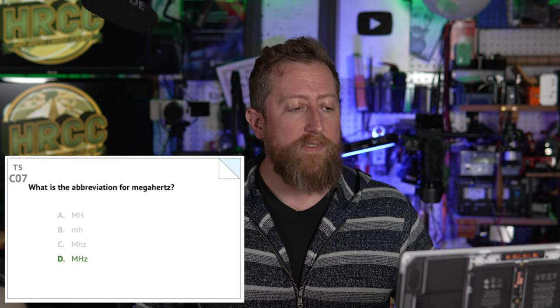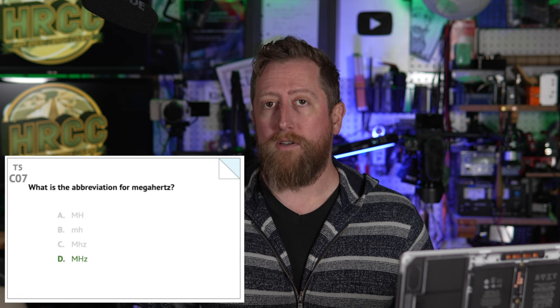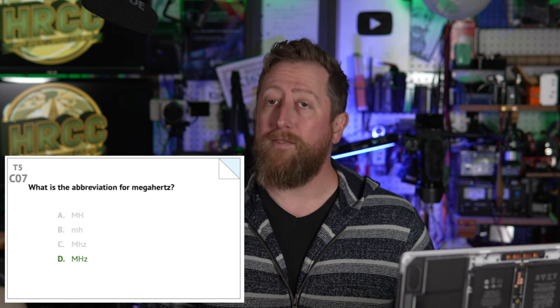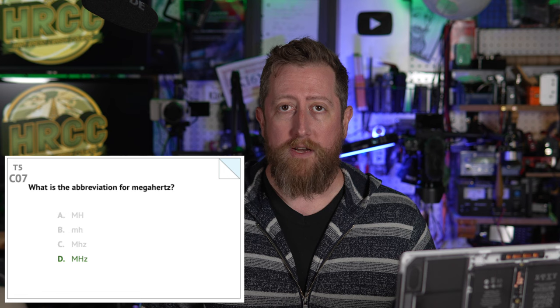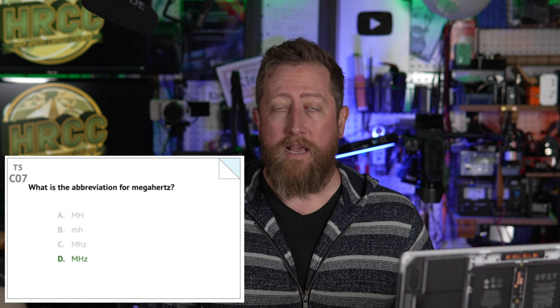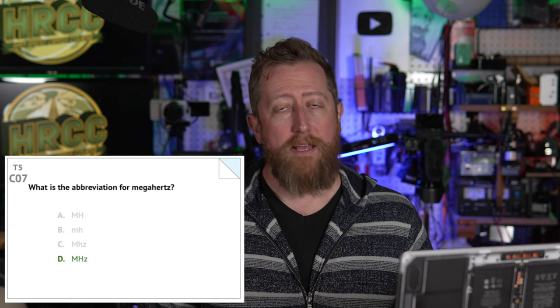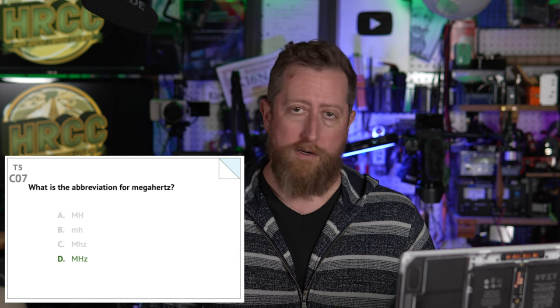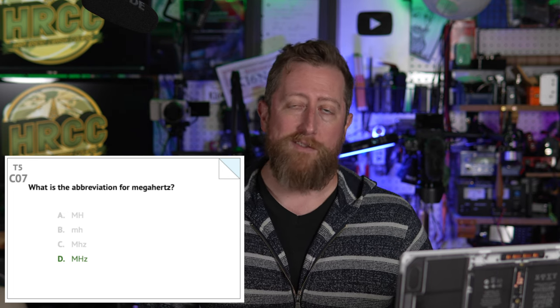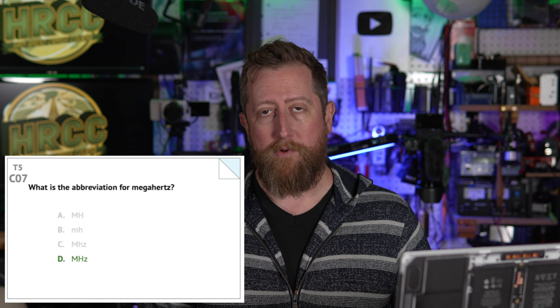Charlie 07: what is the abbreviation of megahertz? It is D, and they want you to be specific with the capitalization: a capital M, capital H, and lowercase z, all next to each other. Megahertz. Hertz is a last name — so mega, capital M, Hertz, capital H, and then the z.